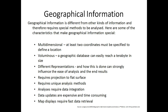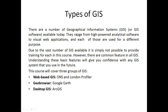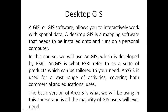Projection, scale, and resolution are important aspects of geographical information. What are the types of GIS? The number of geographic information systems available today ranges from high-powered analytical software to visual web applications, each used for different purposes. Due to the vast number of GIS available, it is not possible to cover all of them, but understanding the basic features gives you confidence with any GIS system you use in future. We have web-based GIS, geo-browsers, and desktop GIS. Web-based GIS examples include the ONS London Profiler; geo-browsers include Google Earth; and desktop GIS includes ArcGIS.